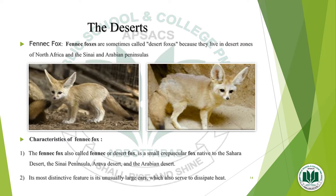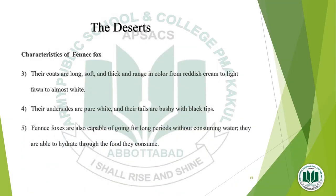Then we have the fennec fox. Fennec foxes are sometimes called desert foxes because they live in desert zones of North Africa and the Sinai and Arabian Peninsulas. The fennec fox is a small crepuscular fox native to the Sahara Desert, the Sinai Peninsula, and the Arabian Desert. Its most distinctive feature is its unusually large ears, which also serve to dissipate heat. Their coats are long, soft and thick, ranging in color from reddish to light brown to almost white. Their undersides are pure white and their tails are bushy with black tips. Fennec foxes are capable of going for long periods without consuming water, as they hydrate through the food they consume.